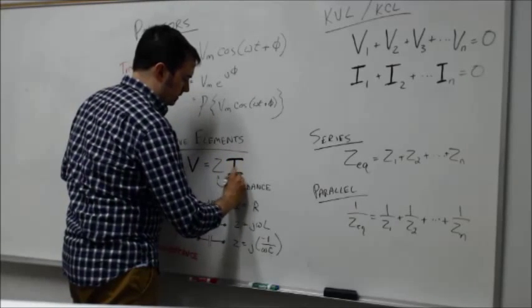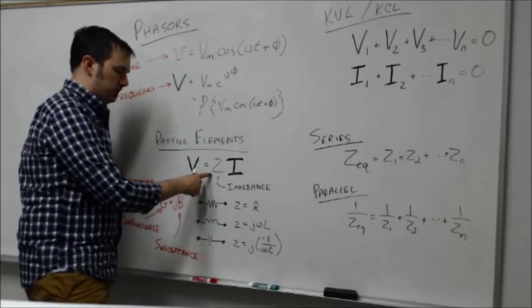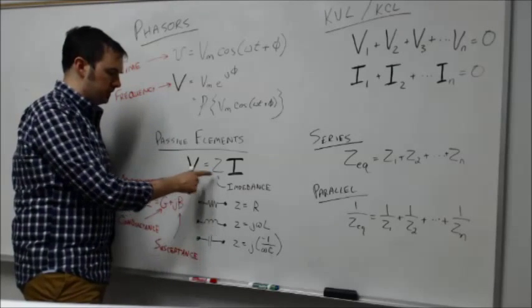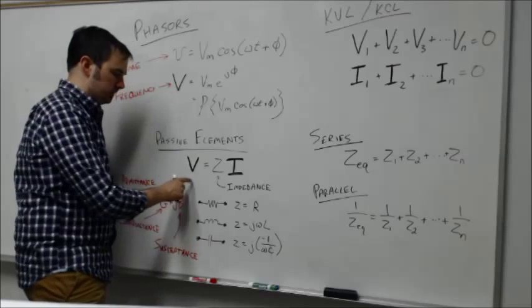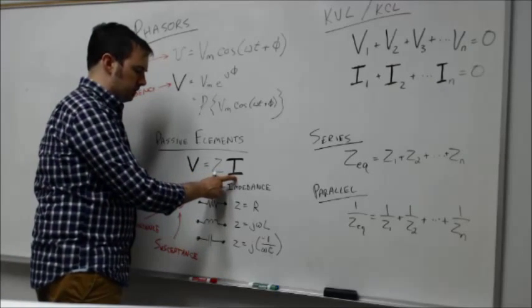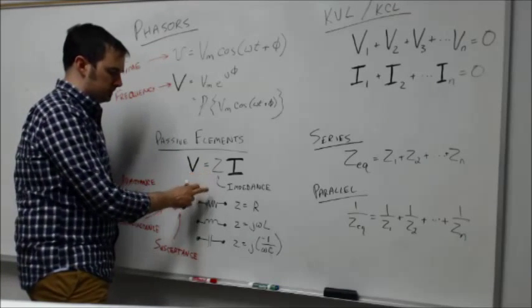This Z term here. In this case, the V and the I are both phasors. The Z then is operating on the phasor current to give us the voltage, and so that impedance is dictated by which specific circuit element you're talking about.